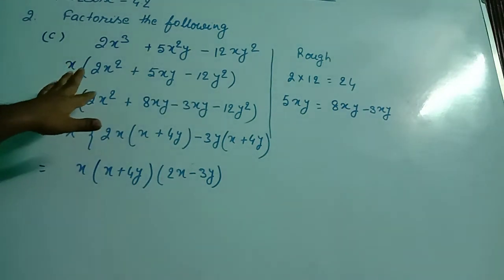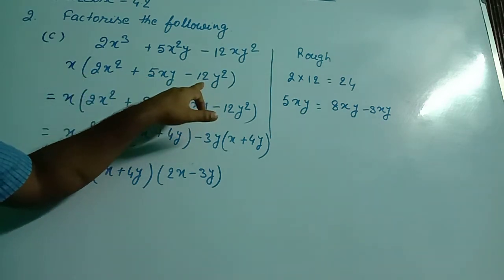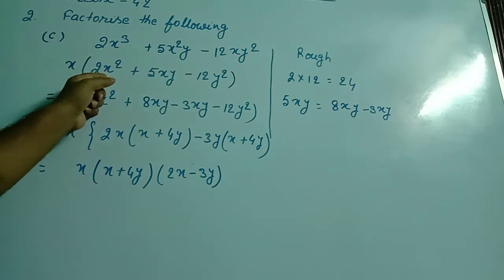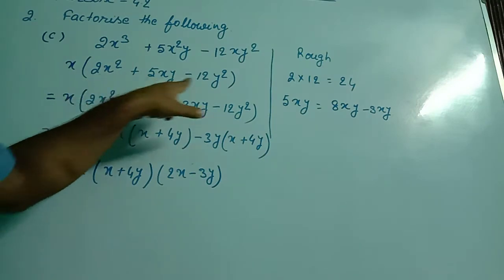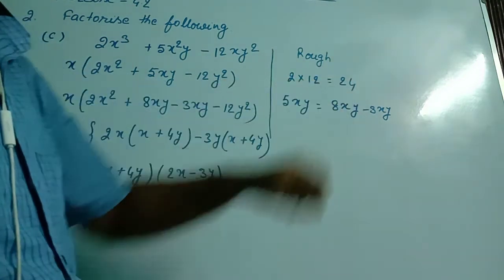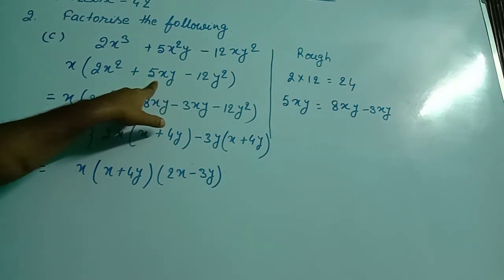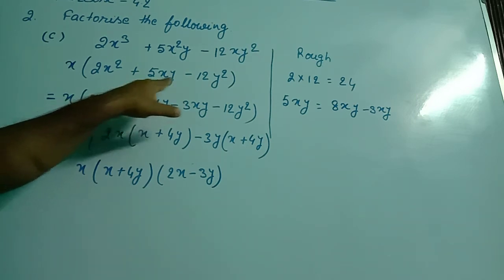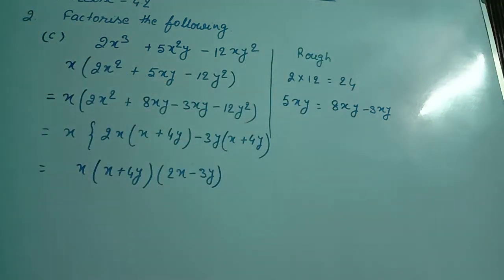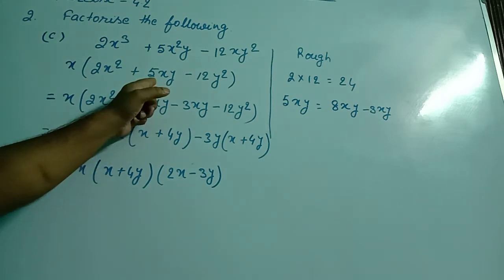Now, we are seeing here is the coefficient of x² and here is also the coefficient of y². If we are getting the coefficients of these two terms, then we multiply those two coefficients. Here, I multiplied 2 into 12 equal to 24. Now, we will split this middle term in such a way that the product of the coefficients of those two splitted terms should be equal to 24, and the sum of those two splitted terms should be equal to 5xy.